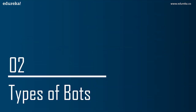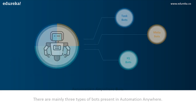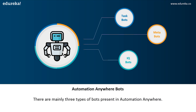Now let's look at the different types of bots offered by Automation Anywhere. There are three types: task bots, Meta bots, and IQ bots. Task bots are the core of automation — they execute repetitive rule-based tasks and you can build them using the Automation Anywhere workbench. Meta bots are more advanced and are used to automate applications on a PC; they can be created using application APIs, visual captures, and integration flow.